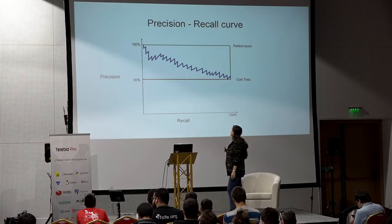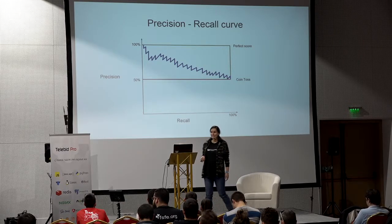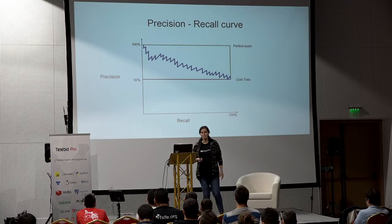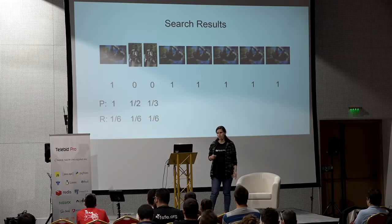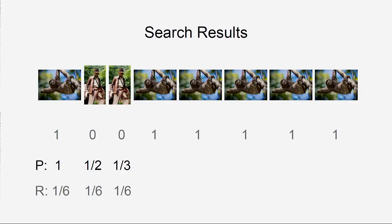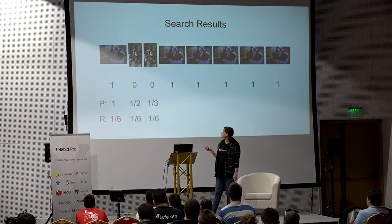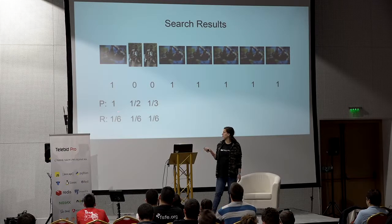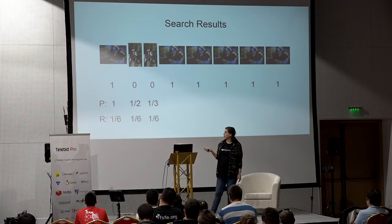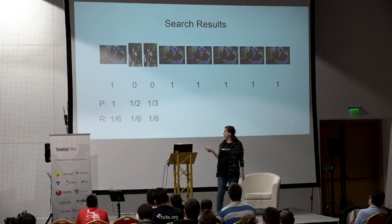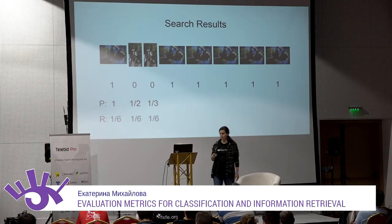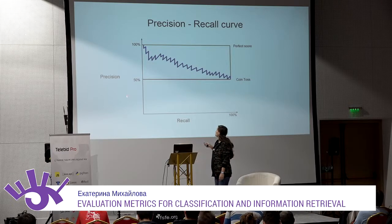The precision-recall curve usually has a distinctive sawtooth look. This is because — in this case with six slots — at the first position we retrieved one slot, so recall is 1/6. It continues to be 1/6 until we get the next slot at position 4. But in between, our precision keeps falling. That's exactly why the curve has that sawtooth shape.